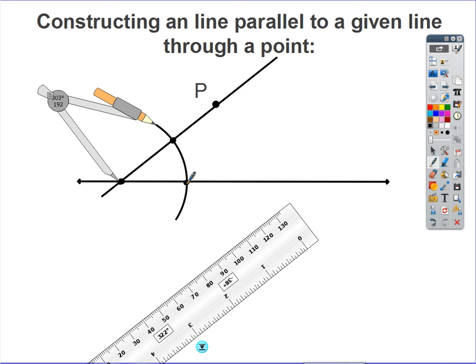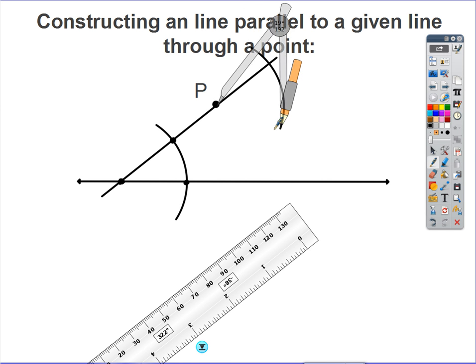Without changing the span of my compass, I'm going to draw a similar size arc, maybe a little bit bigger, here starting at point P. Without changing the span, I'm going to draw another arc right there off of P. So this part, this vertex right here, A and P are both this vertex at both angles.